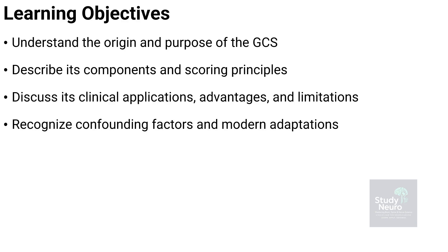By the end of this session, you should be able to understand the origin and purpose of the Glasgow Coma Scale — why it was developed and how it transformed the assessment of consciousness. Describe the three key components of the scale — eye, verbal, and motor responses — along with their scoring principles. Discuss its clinical applications, as well as the major advantages and limitations that affect its use in real-world practice. And finally, recognize the common confounding factors that can alter scoring and appreciate the modern adaptations of the GCS in current neurocritical care.